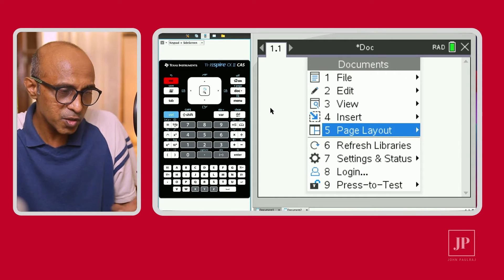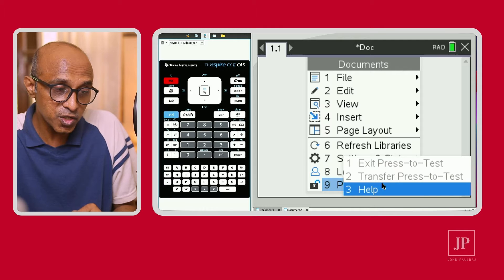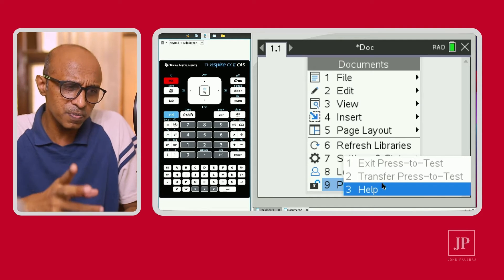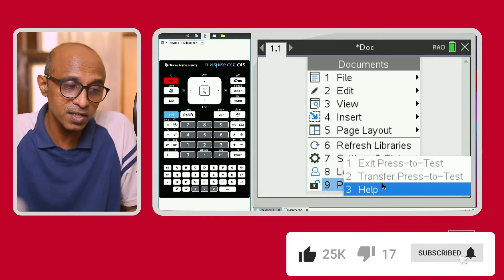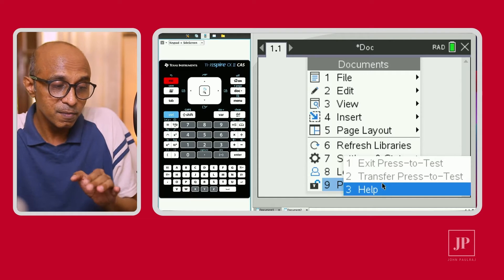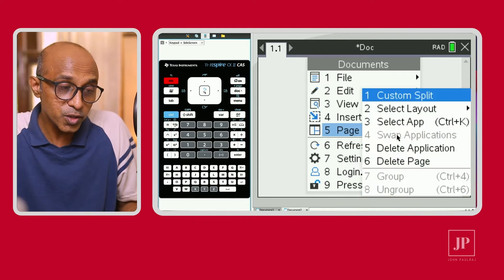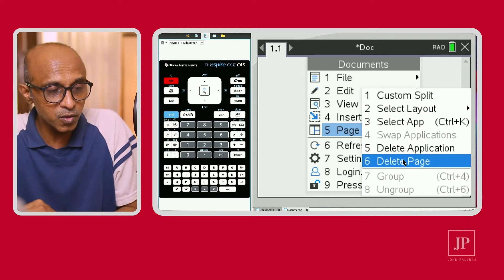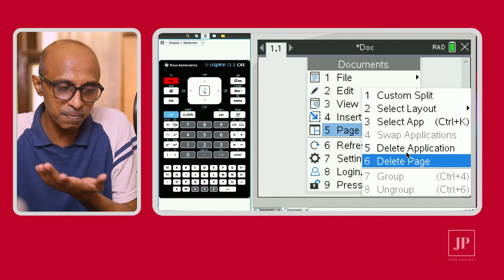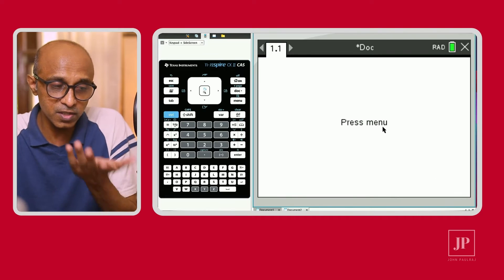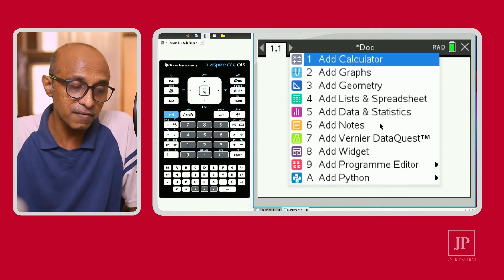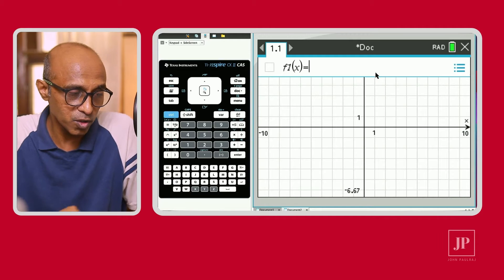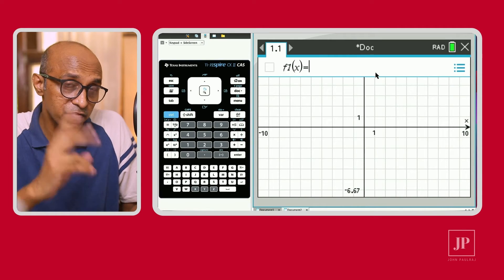Also, you've got the option on number four to insert a problem and a page. We'll see the differences between problem and a page in some other video. You can also insert a widget using this key, the doc key. You can also see access to press to test. There are other ways to exit and interpret press to test, but this particular key doc key becomes important. There's also this thing called the page layout, where you can go and delete a page if you don't like a certain page or an app that you've opened. So doc key becomes my second favorite key.